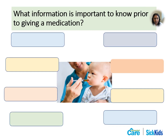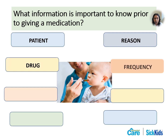Prior to giving medication, it is important to think about the rights of medication administration. First, the right patient or child — ensure you identify the correct child before giving the medication. Second, the right reason for the medication. Third, the right drug — ensure the medication you are giving is correct. It would be helpful for the family to send the bottle of medication to confirm. Fourth, the right frequency — discuss with the family and read the medication bottle for how often it is given and when the last dose was given.